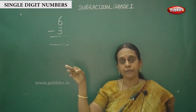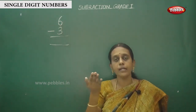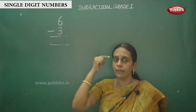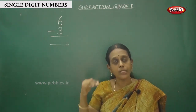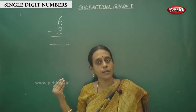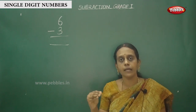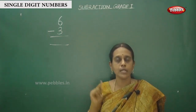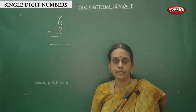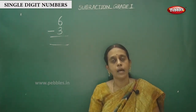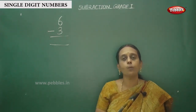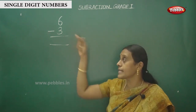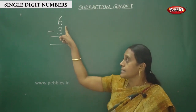In addition we say the after number; in subtraction we say the before number. Keep 6 in the mind, say before numbers starting from 6: 5, 4, 3. So the answer is 3. We count back using fingers — before 6 is 5, then 4, then 3 — and that gives us 6 minus 3 equals 3.